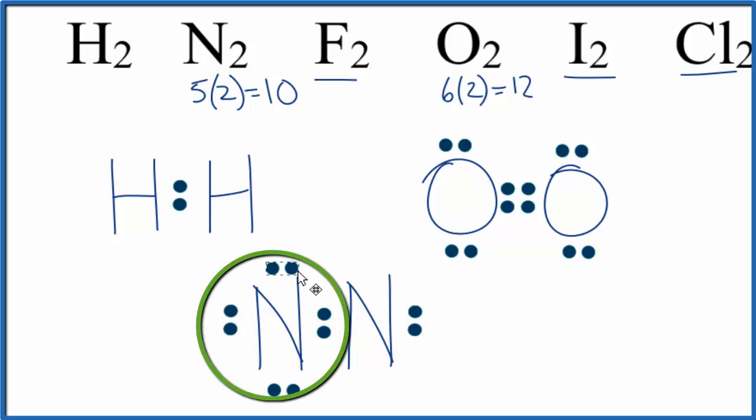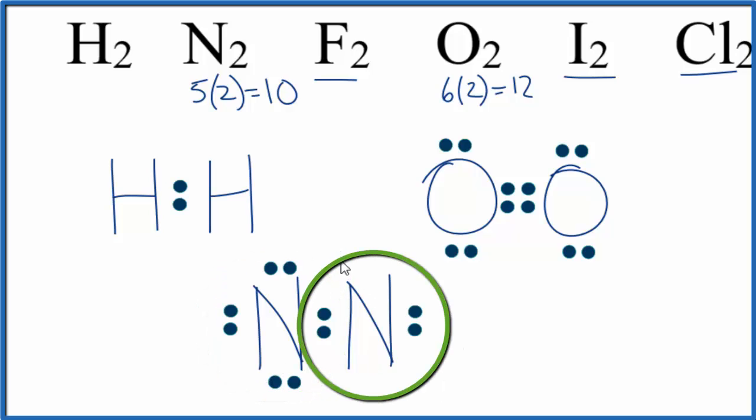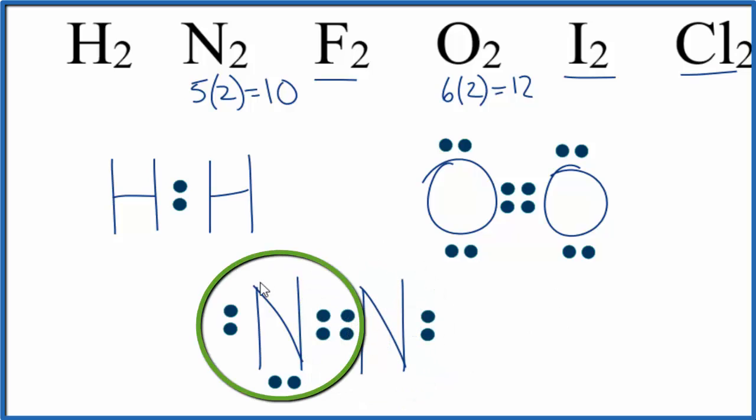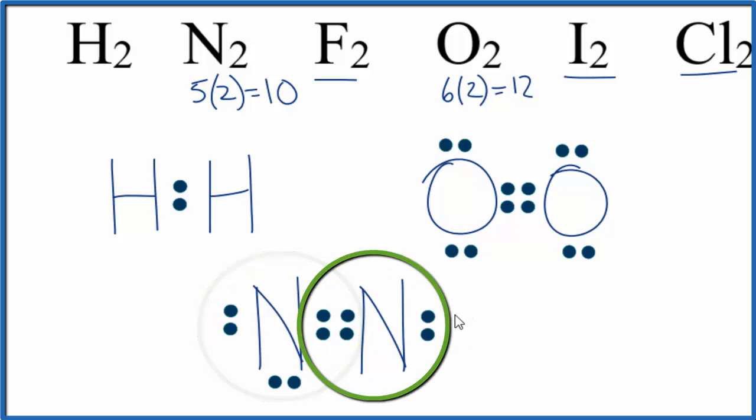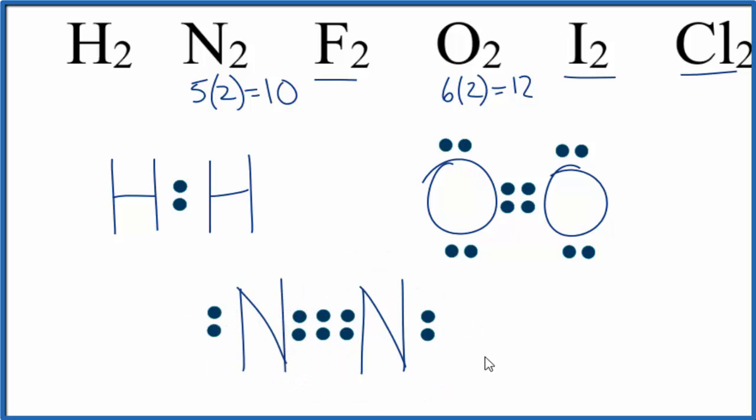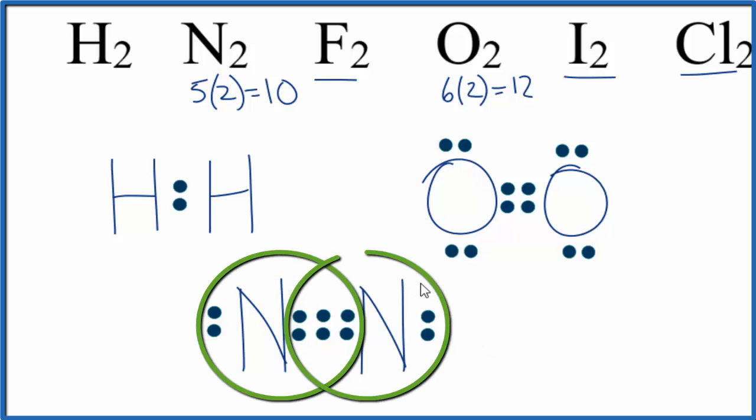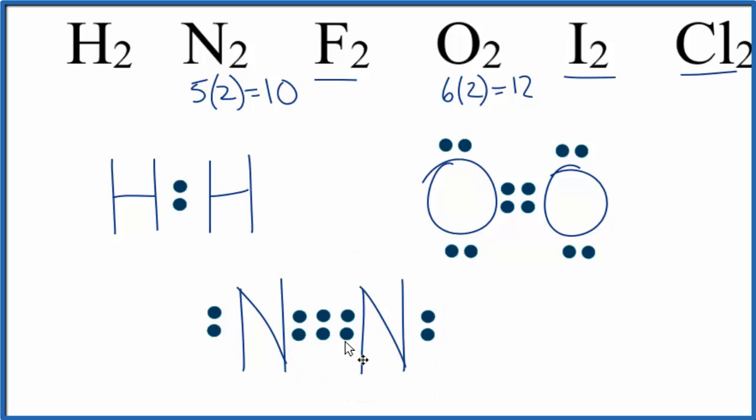So this nitrogen, it has eight valence electrons, but this nitrogen only has four. So again, we're going to need to form a double bond here. Let's do that. So this is better. This nitrogen has eight, and this nitrogen now it has six. Let's just move another pair up here, form a triple bond. And now we're still using just 10 electrons, 10 of these valence electrons. Nitrogen has an octet here. This one has an octet. That's the Lewis structure for N2. We have a triple bond.